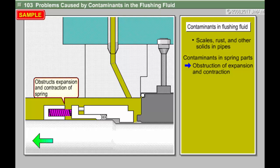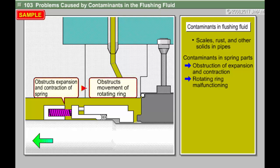And if the shaft then moves in the thrust direction, such as when the pump starts up or shuts down, the rotating ring also moves along with it. As a result, a gap develops in the seal surface and massive leakage occurs.